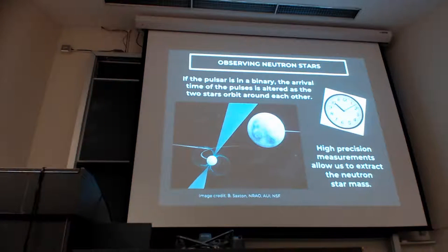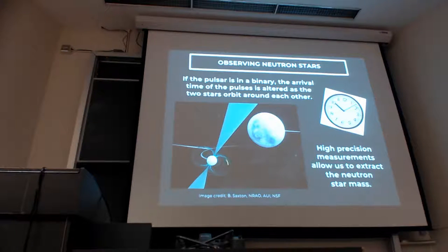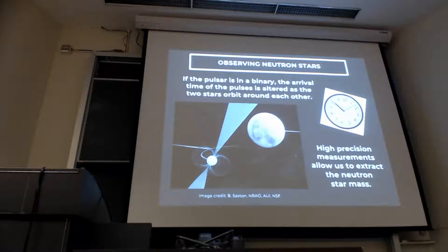In binary systems, if you time the pulsar very well and track its evolution, you find that the companion actually influences the pulsar and the pulse you observe. It's possible to write down mass equations, and by tracking the pulsar over many years — sometimes 30 or 40 years — you can extract things like the mass of the pulsar from those measurements. Some of the largest masses we know of are about two solar masses, so it weighs twice as much as the sun.